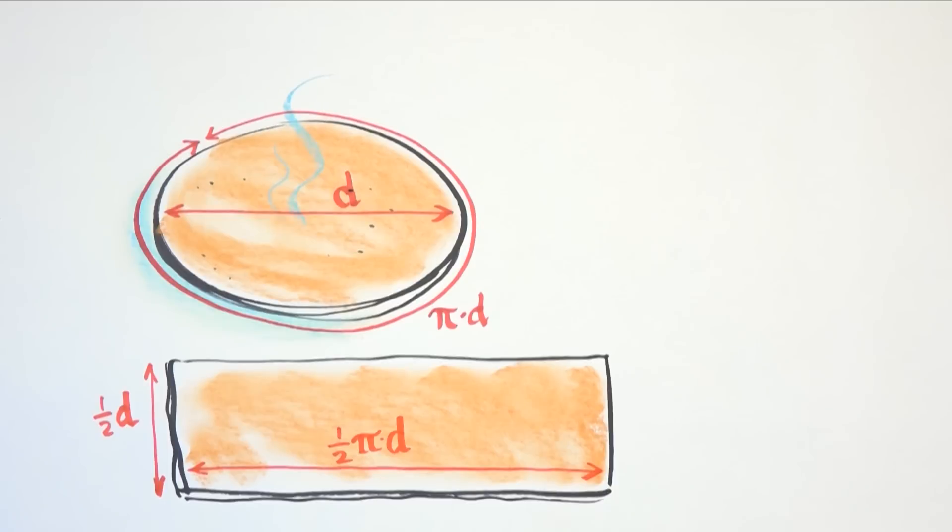Since diameter is just twice the radius, we can replace D with two R in all these different places.